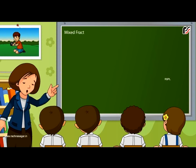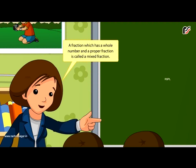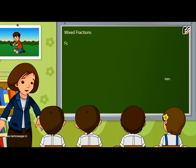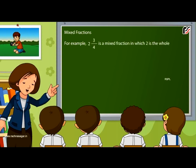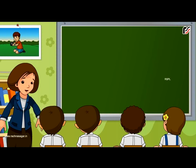Mixed fractions: a fraction which has a whole number and a proper fraction is called a mixed fraction. For example, 2 and 3 by 4 is a mixed fraction in which 2 is the whole number or integral part and 3 by 4 is the fractional part.